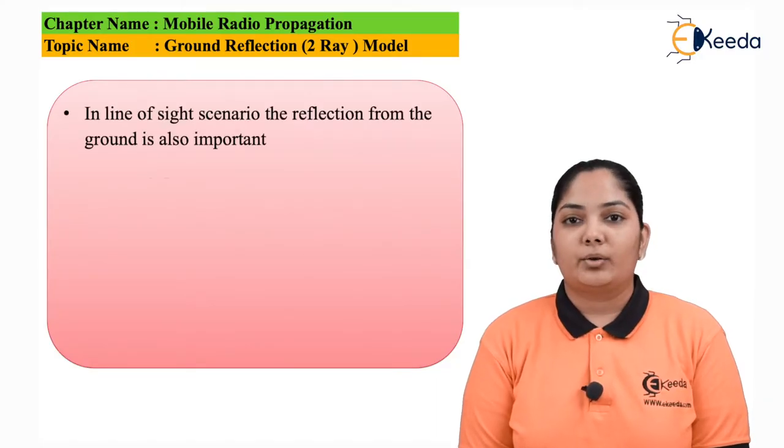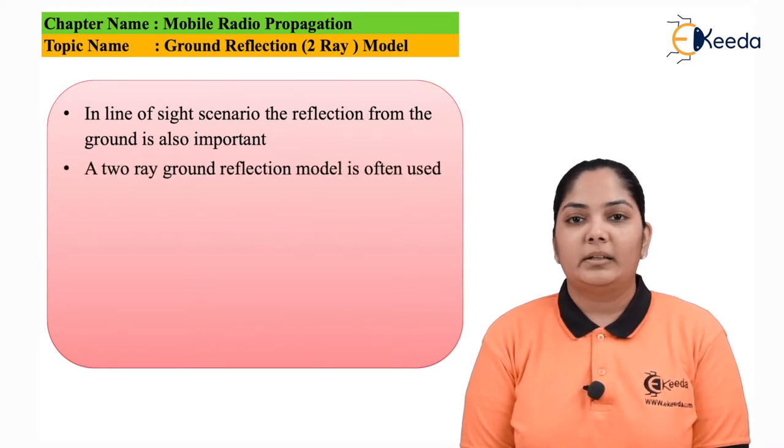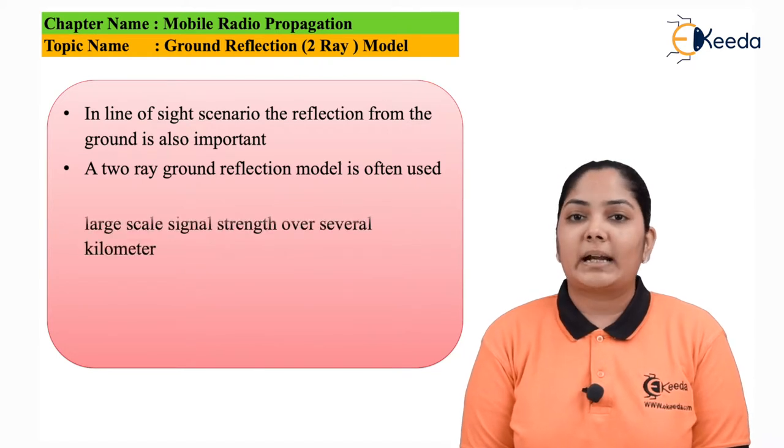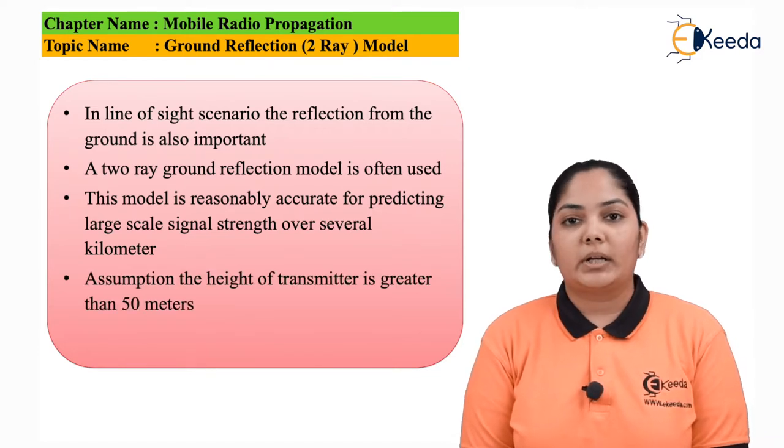In a line of sight scenario, it is very simple that the communication takes place between the transmitter and the receiver. But in this line of sight scenario, if the distance between the transmitter and the receiver increases, then there is some part of the waveform which gets reflected to the ground and then gets received at the receiver side.